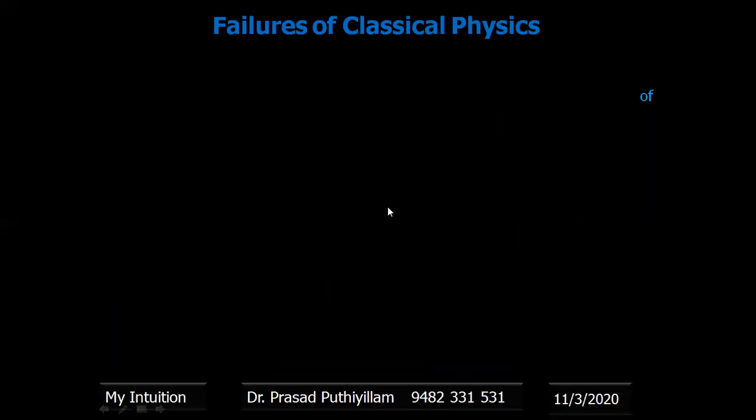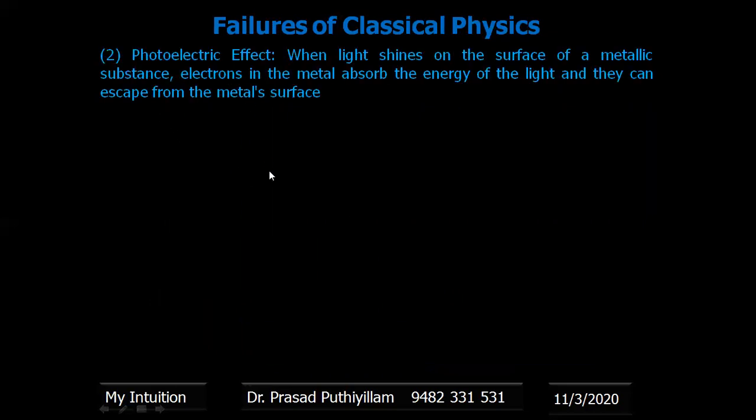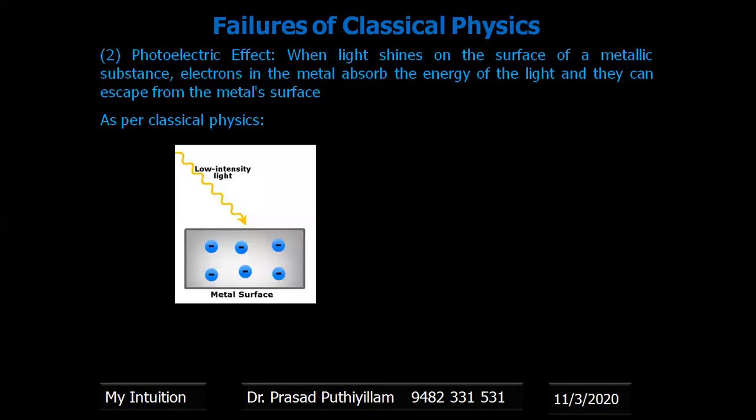The second failure is with the photoelectric effect. That means when light shines on a surface of a metallic substance, the electrons on the metal absorb the energy of the light and they can escape from the metal surface. That phenomenon is known as photoelectric effect.